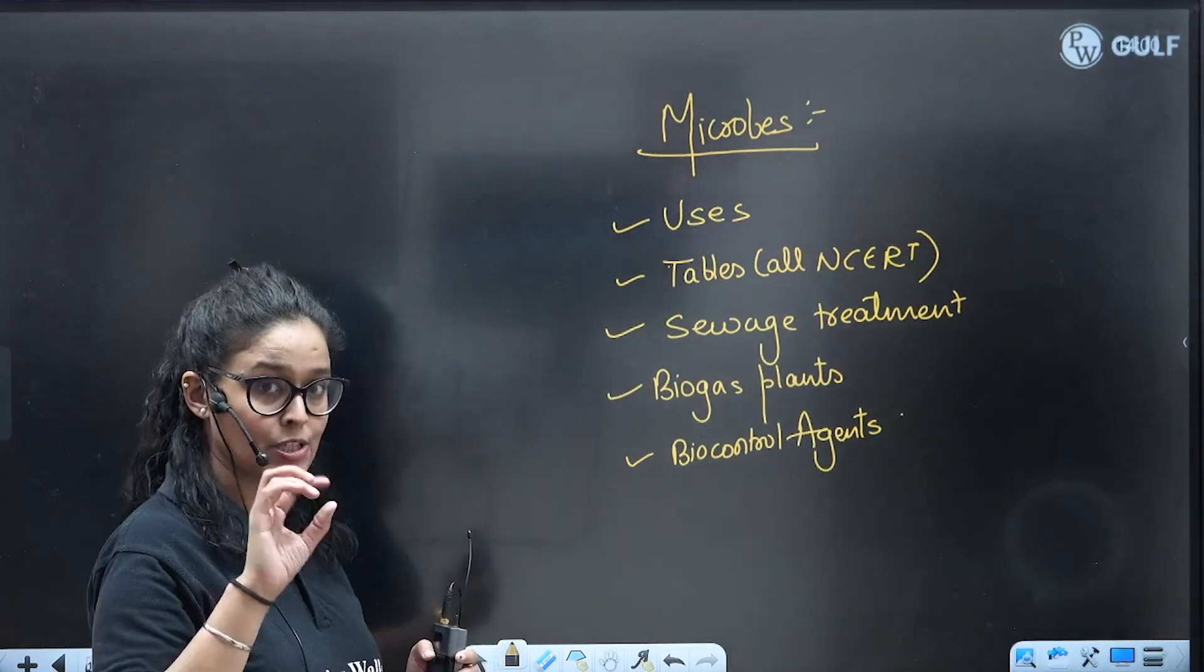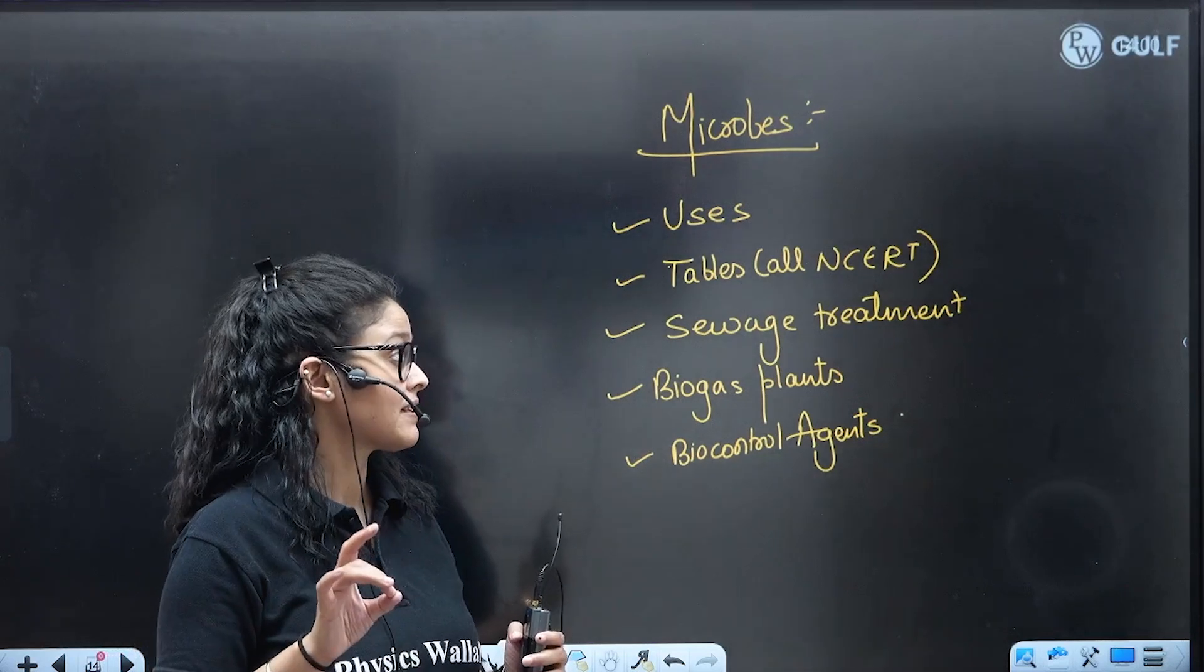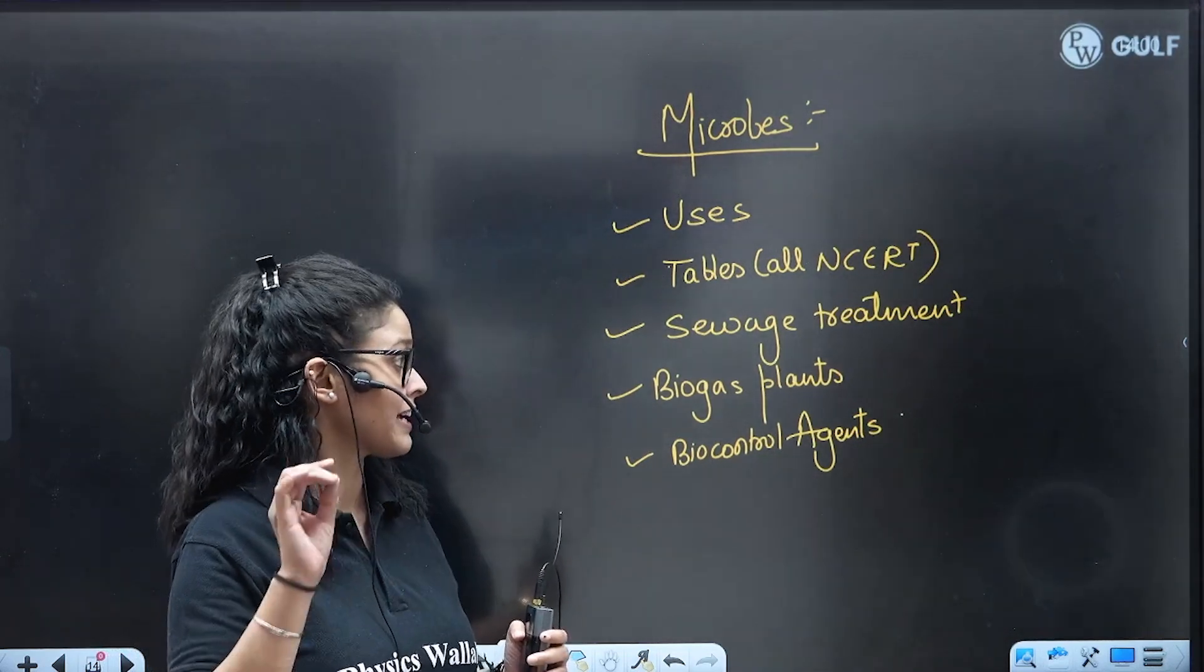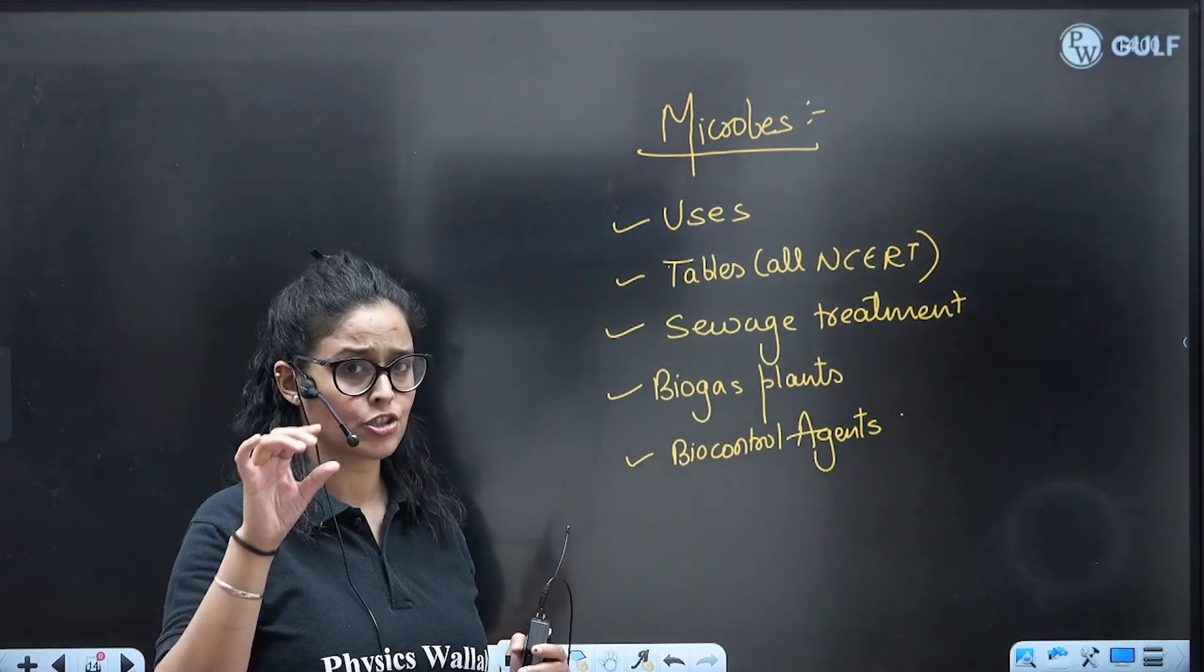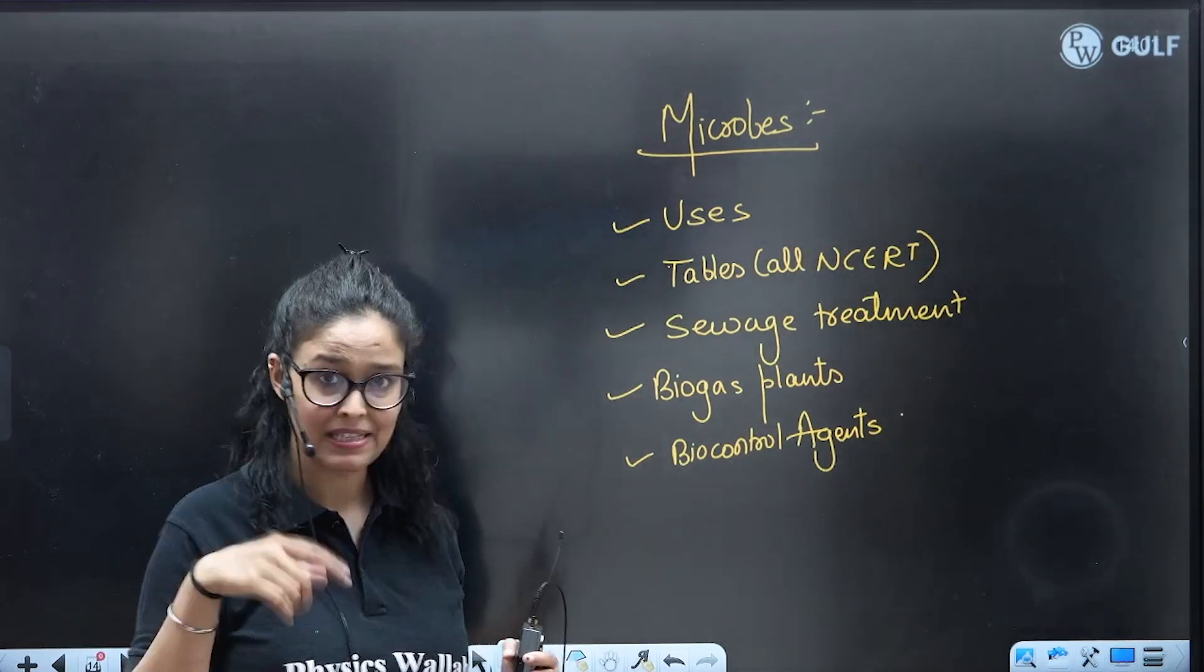Microbes and its uses, very important. All the tables given in NCERT important. Sewage treatment is important, biogas plants and biocontrol agents - they might ask you the examples and their functions.